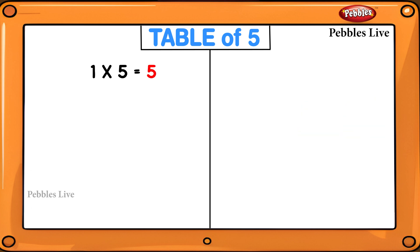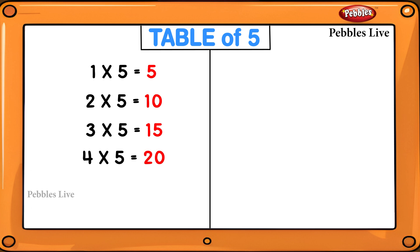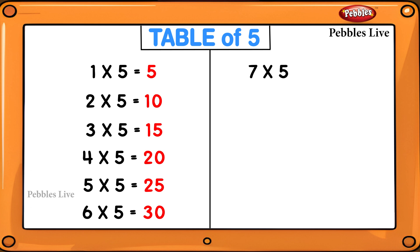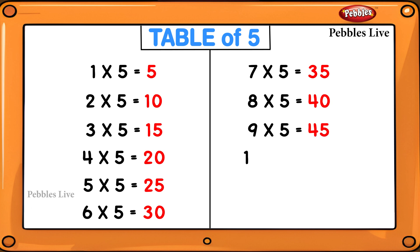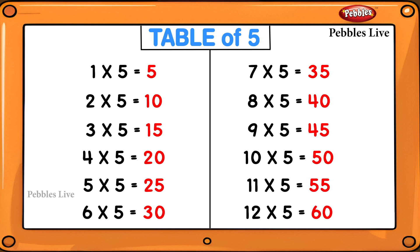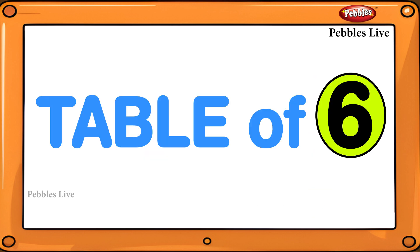1 five is 5, 2 fives are 10, 3 fives are 15, 4 fives are 20, 5 fives are 25, 6 fives are 30, 7 fives are 35, 8 fives are 40, 9 fives are 45, 10 fives are 50, 11 fives are 55, 12 fives are 60. Table of 6.